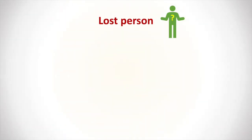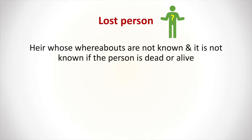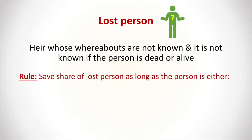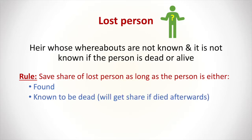The next topic is a lost person — one whose whereabouts are not known and it is unknown if the person is still alive or dead. This person could be one of the heirs who can inherit from the deceased. The rule says we need to save the share of the lost person until one of three things happens: the person is found and we give the share to that person; or we find out the lost person is actually dead, in which case we determine whether death occurred before or after the current deceased.